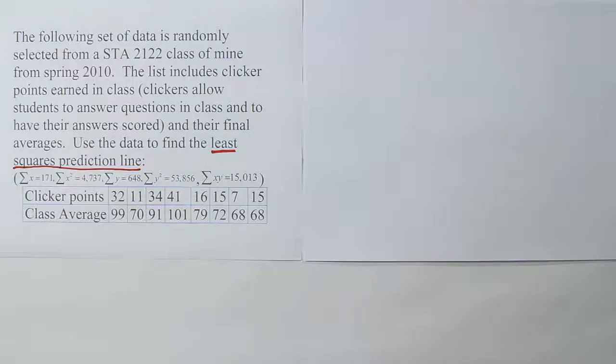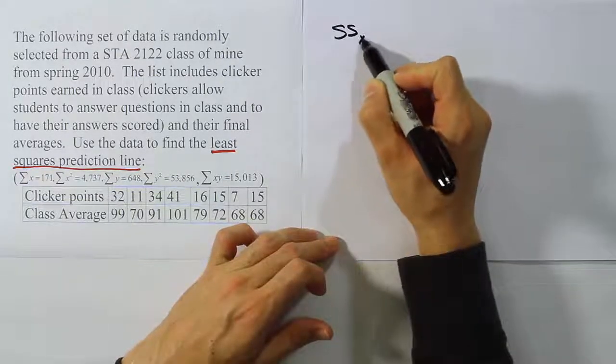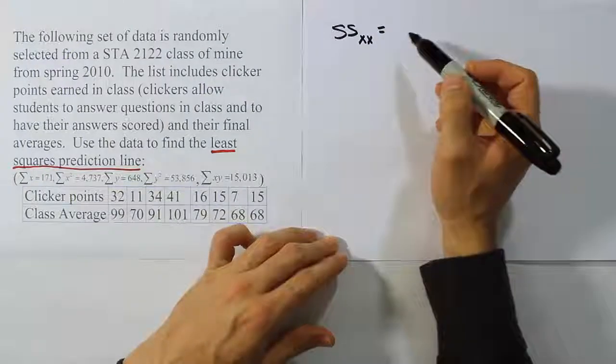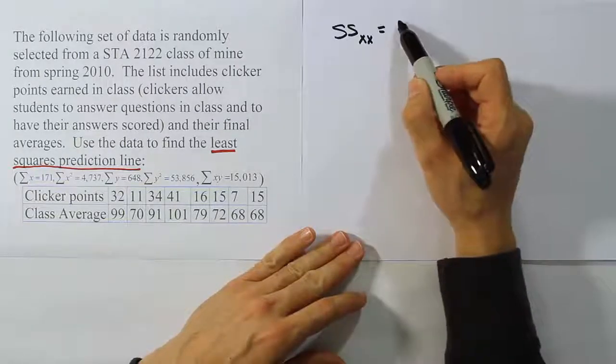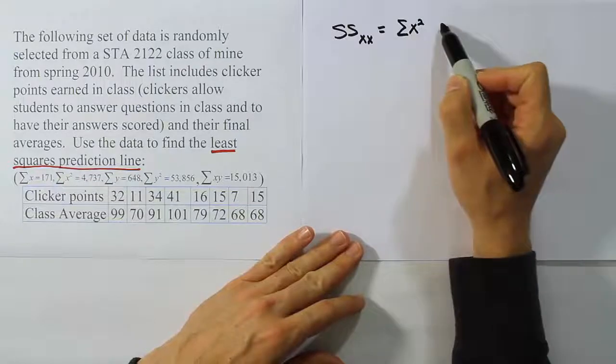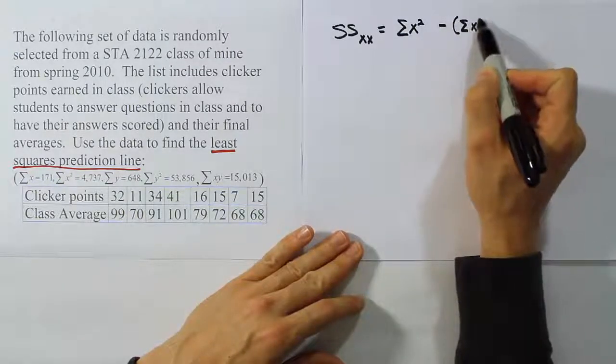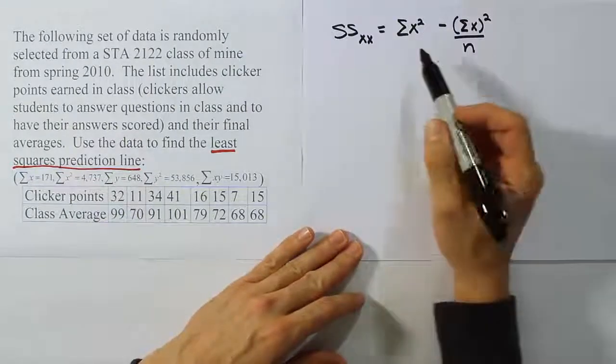is to come up with a quantity called sum of squares for X. Sum of squares XX is the notation that they use. The formula is basically the top of the variance formula without the denominator. We have the summation of X squared minus the summation of X quantity squared over N. That's the formula essentially.